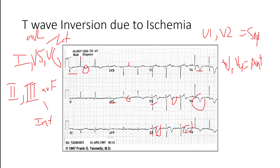We can also use adjacent leads — contiguous leads — for example V2 and V3 aren't looking at the exact same area (one's more septal, one's more anterior wall), but they're right next to each other and fed by the same artery, the LAD. So those findings are significant. You could even group V4 and V5 — even though they're fed differently, it could be a large infarction spilling into some of the lateral wall potentially too.